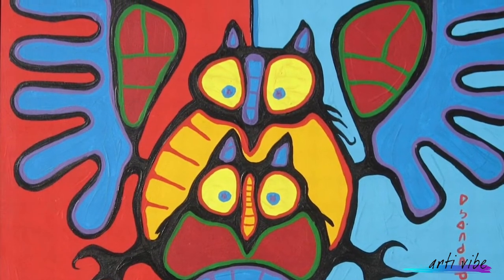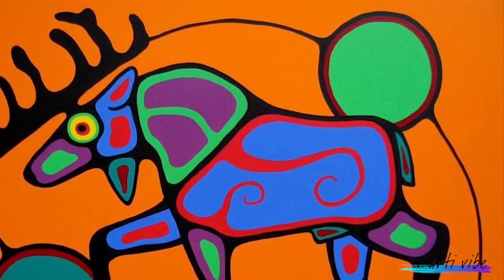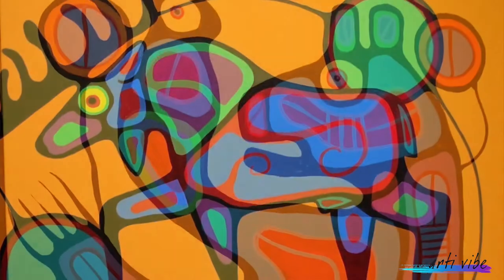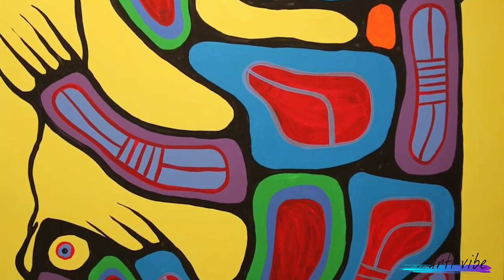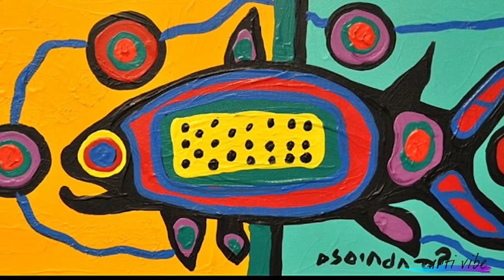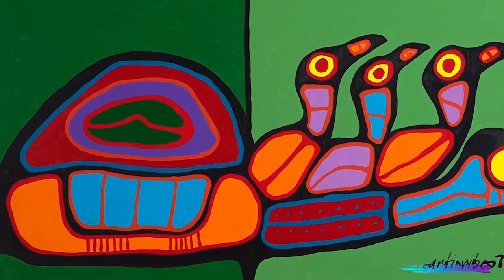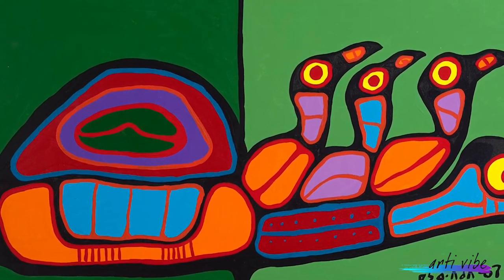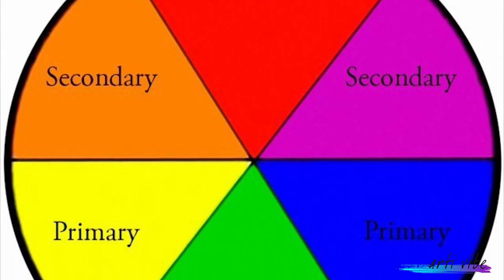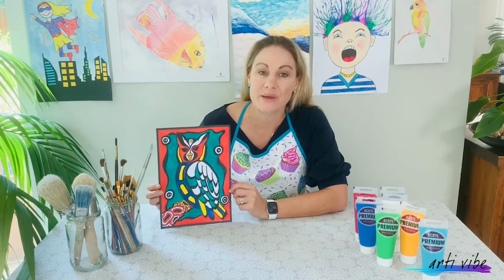Let's have a quick look at his paintings and see if we can decide exactly which colours he mainly used. As we can see, Morrisseau often used primary and secondary colours, so that is what I would like you to use in your paintings today. Think carefully about which colours you are going to use.